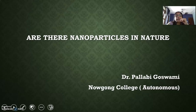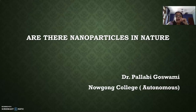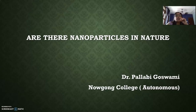100 nanometers means 100 millionths of a millimeter, or 100 billionths of a meter, or it may be less than that. It includes devices or systems made by manipulating individual atoms or molecules, as well as materials which contain very small structures. Nanomaterials are usually considered to be materials with at least one external dimension that measures 100 nanometers or less.